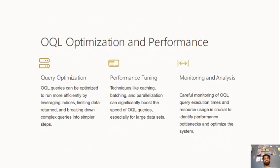Performance tuning techniques like caching, batching, and parallelizing can significantly boost the speed of OQL queries, especially for large datasets. Monitoring and analysis: careful monitoring of OQL query execution times and resource usage is crucial to identify performance bottlenecks and optimize the system.